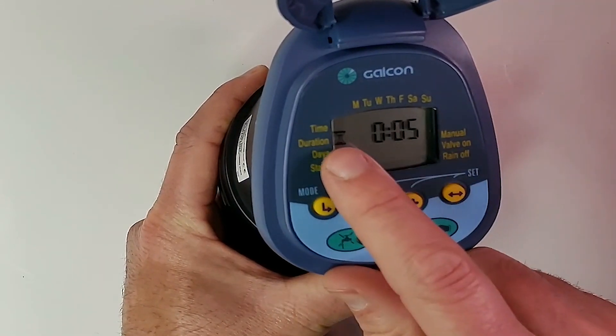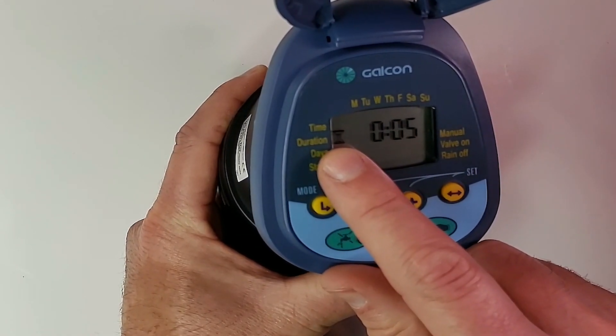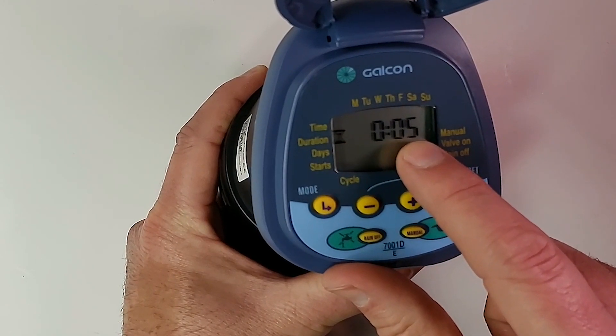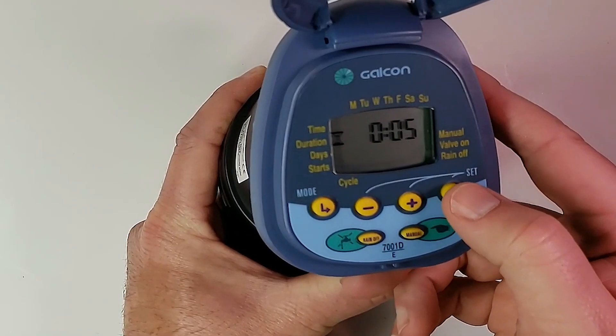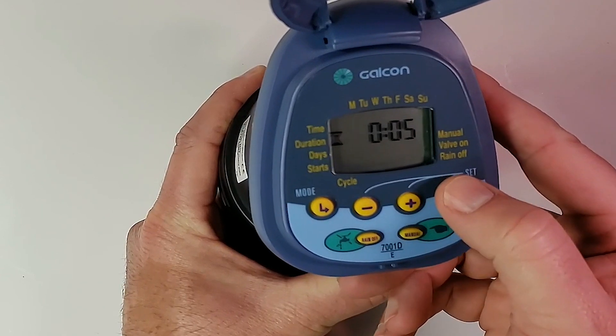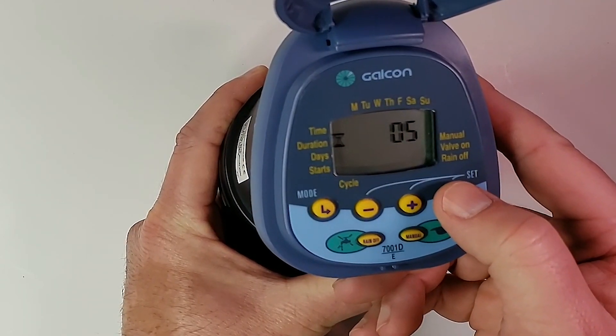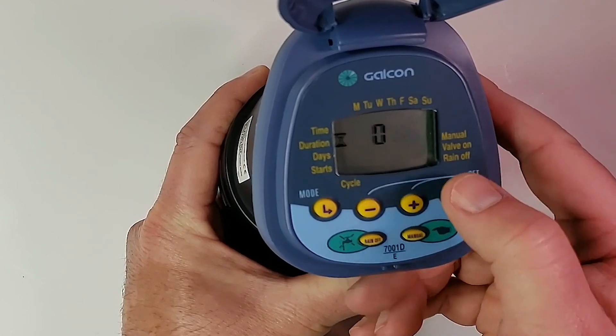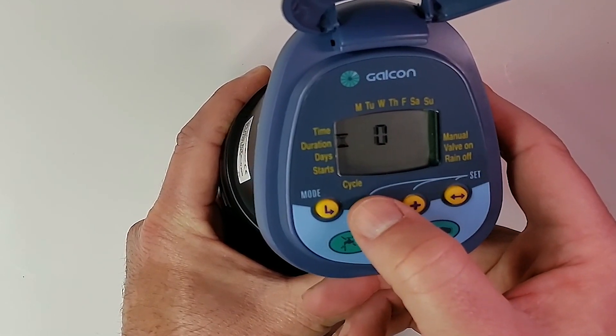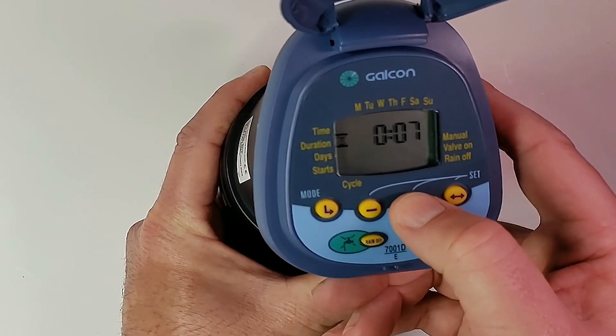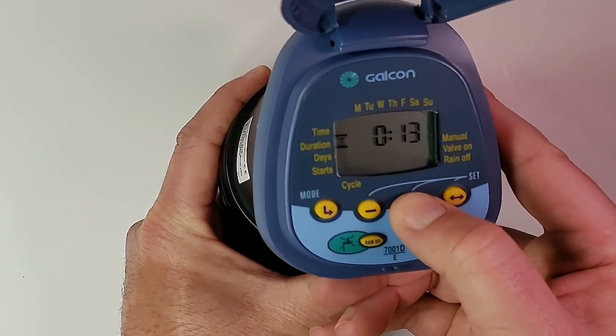Enter button again tells us what duration our valve is going to stay open for. It's currently set at five minutes. We want to hit the set button, that gets our hours flashing. We actually want to set 20 minutes. So we hit our set button again, gets our minutes flashing. Then we're going to hit the plus button until we get to 20.